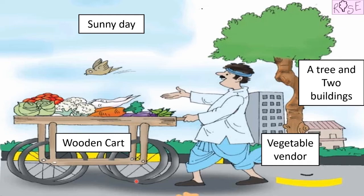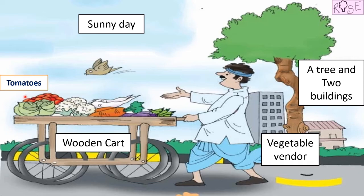Now, can you tell me the names of the vegetables that are on this wooden cart? Which is this vegetable? Can you name this vegetable? These are some tomatoes. Yes, these are tomatoes. What are these? Can you see these? These are cauliflowers. Yes, I can see three cauliflowers on this wooden cart.